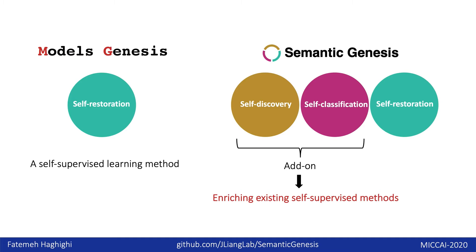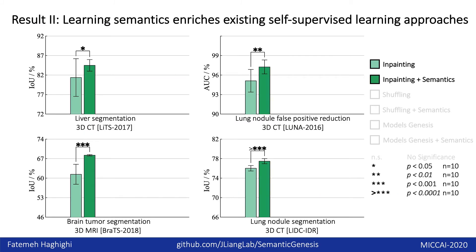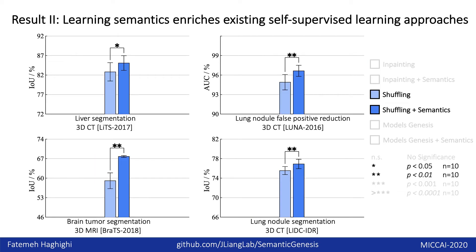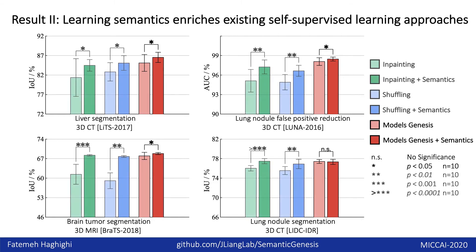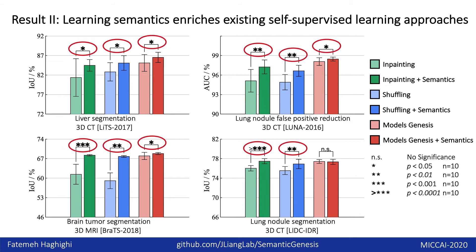To show this, we added self-discovery and self-classification to three popular self-supervised methods, including inpainting, shuffling, and models genesis. As seen, each semantics-enriched model outperforms the corresponding original model across four 3D target tasks.